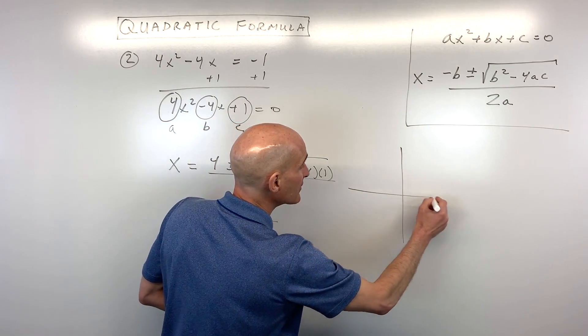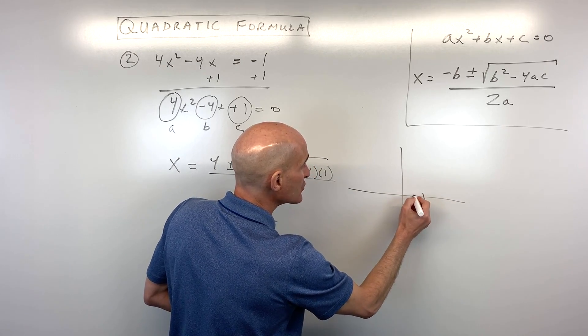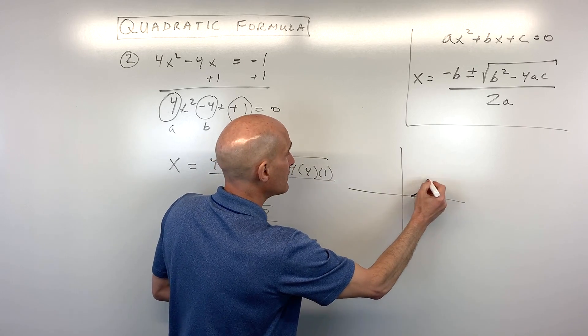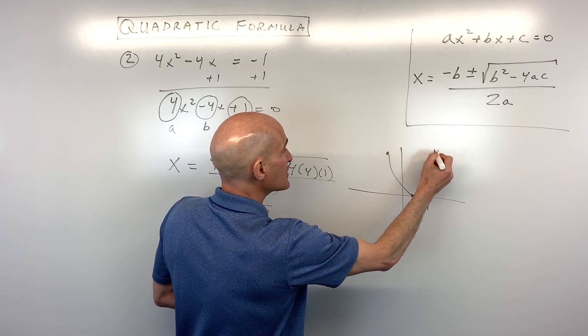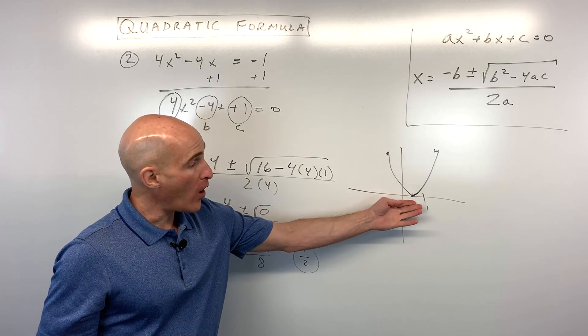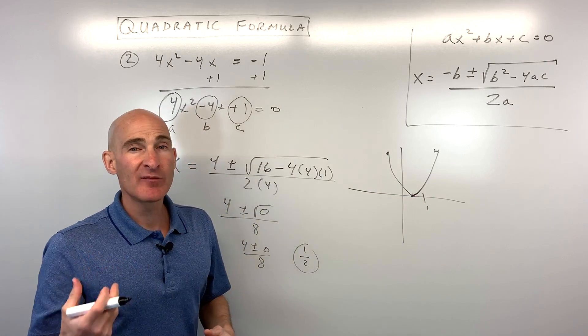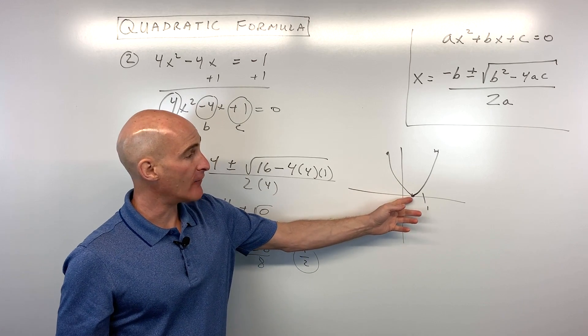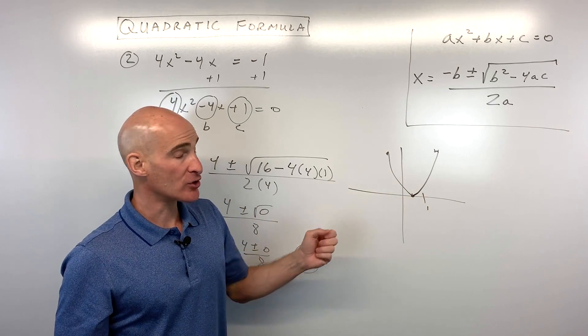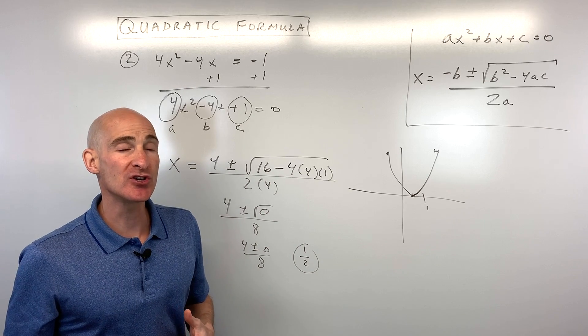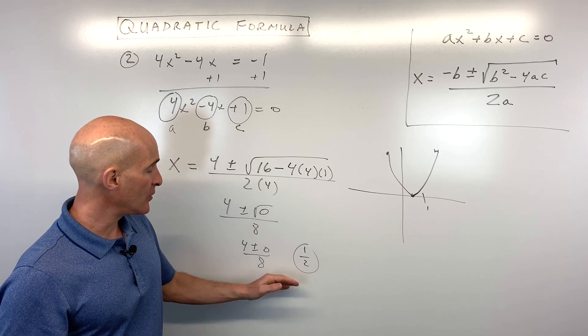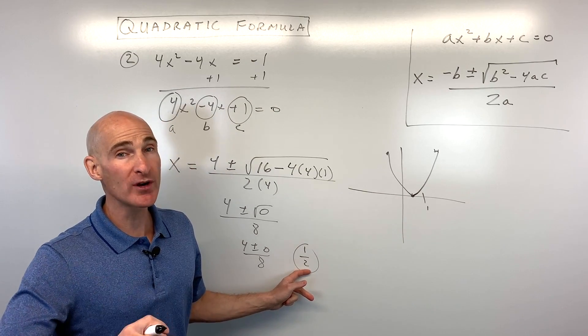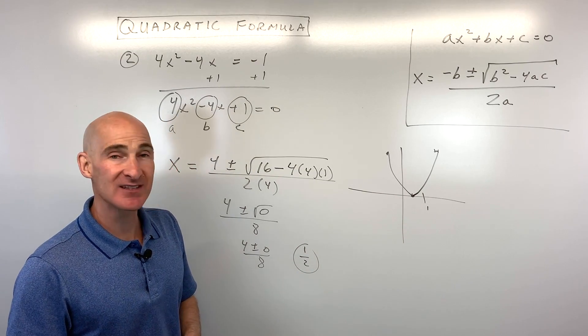And what this means graphically is it's crossing right here at 1 half. The A value is positive, so we know it's opening up. And so in this case, what we have is we only have 1 x intercept. And we're going to talk a little bit about this more in my video on the discriminant, where you can tell whether you're going to have one solution where it crosses at one point, or two solutions, or no real solutions. But in this case, we just had one real solution, and that solution is 1 half. So one more example to illustrate this concept.